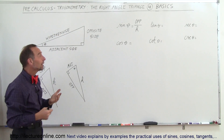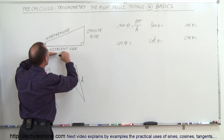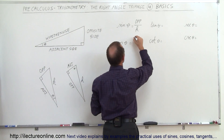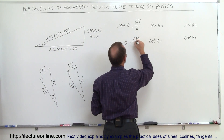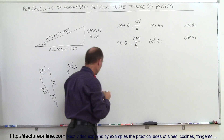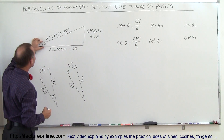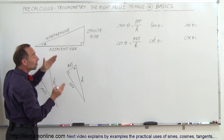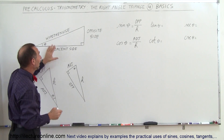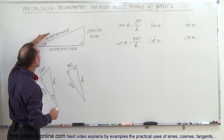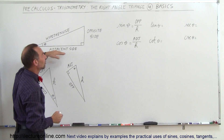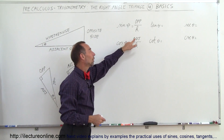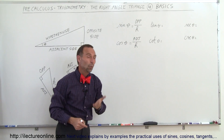The cosine of theta is the ratio of the adjacent side to the hypotenuse — the adjacent side divided by the hypotenuse. Notice that if the angle becomes very small, the hypotenuse and the adjacent side become almost equal in size. When the angle goes to zero, the cosine will equal one.